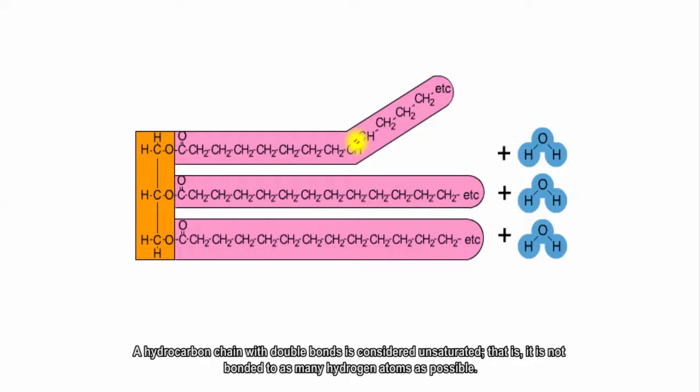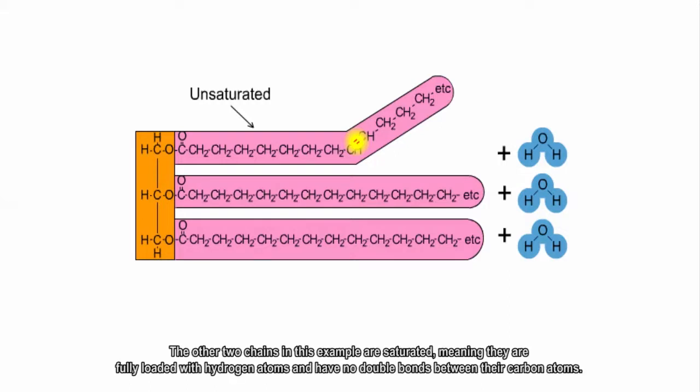A hydrocarbon chain with double bonds is considered unsaturated. That is, it's not bonded to as many hydrogen atoms as possible. The other two chains in this example are saturated, meaning they're fully loaded with hydrogen atoms and have no double bonds between their carbon atoms.